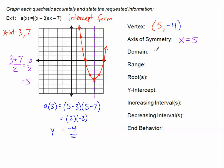We'll come back and finish all the rest of the characteristics as a try problem. But right now your goal is to take your intercept form, find the x-coordinate of the vertex, and then plug that in to find the y-coordinate. We took the 5 and plugged it right in.